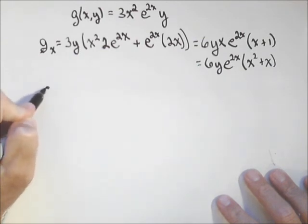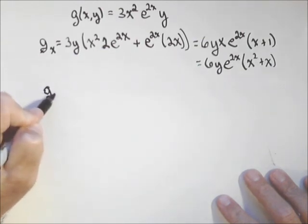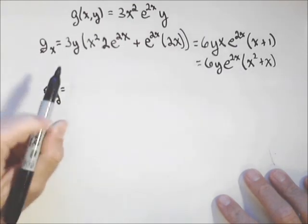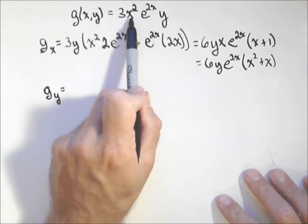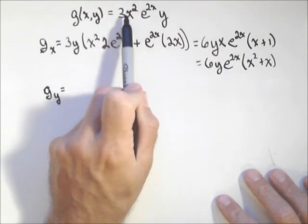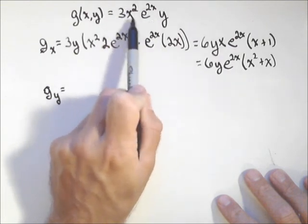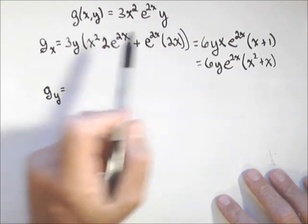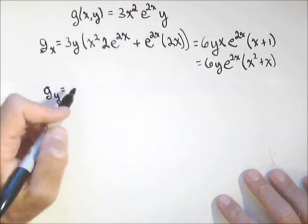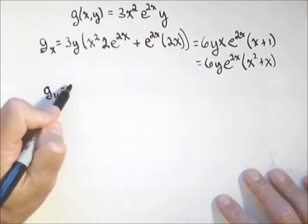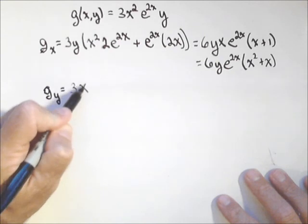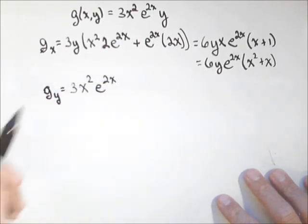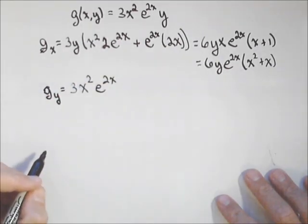You're going to find this next one is actually pretty quick: the derivative of g with respect to y. That makes this a constant — the whole x-squared part is a constant. So we're taking the derivative of a constant times y, which is just a constant. Because the derivative of y is one, this is just three x squared e to the two x. And there's our partial with respect to y — it's done.